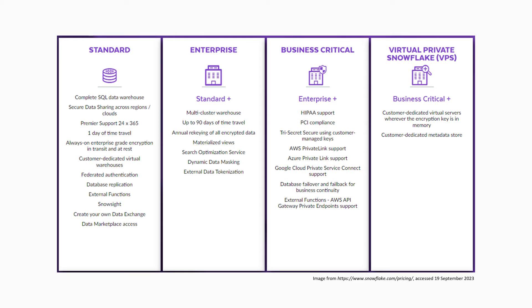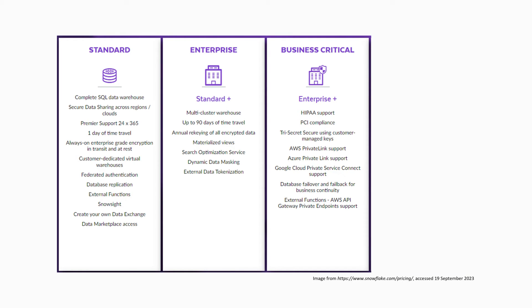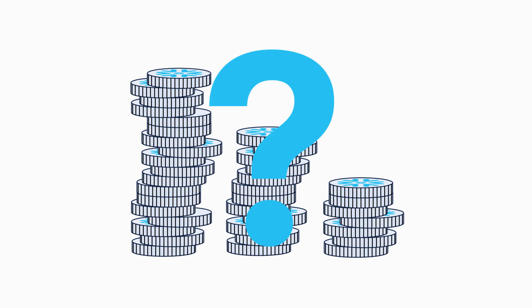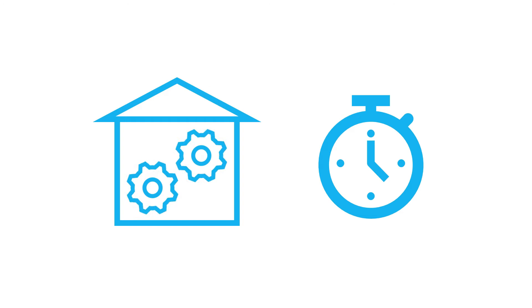Each edition offers a different level of service and has a different price for compute power. Sticking with our example of a Snowflake account hosted in Azure from Eastern Australia, the first three editions would cost $275, $405, or $550 USD — not per query, but per credit. The next obvious question is: how many credits does it take to run a query? In most cases it'll be less than one, but that also depends on the warehouse you use to run the query and the runtime of the query.